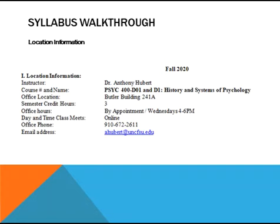Let's go ahead and start with the syllabus walkthrough. As you've seen with just about every class, we go over this information to make sure you know how to contact us. The course we're talking about is Psych 400. I have two systems classes this semester — D01, a converted face-to-face to online, and D1, the online only. My physical office location is in the Butler Building, Suite 241, Office A. This is a three credit hour course, and my office hours are Wednesdays 4 to 6 p.m. and any other time by appointment. This class will only meet online. You have my phone number there — it rings to my cell phone so I don't miss any calls.